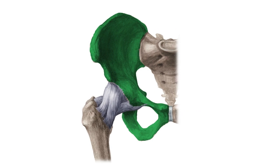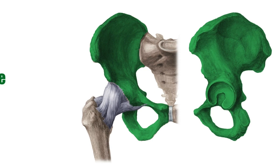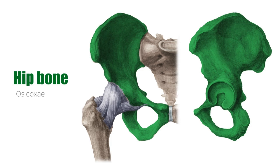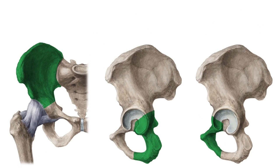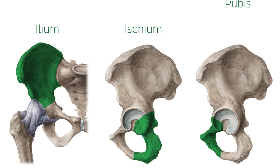One exception would be the first bone up for discussion. Starting proximally is the hip bone. It's a very unique bone composed of three parts. You will see them highlighted in green: the ilium, the ischium, and the pubis.